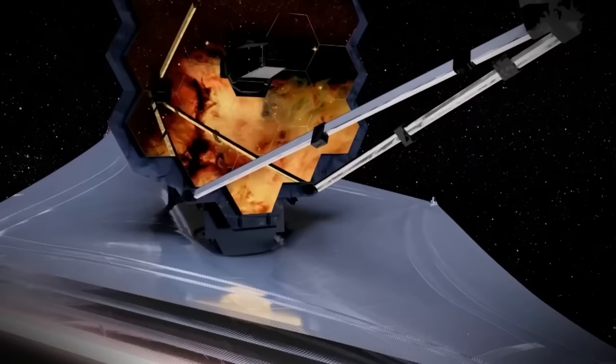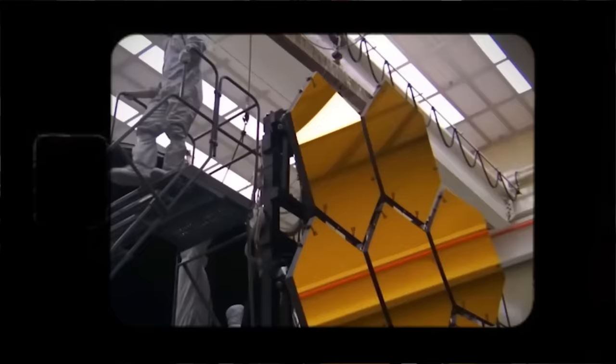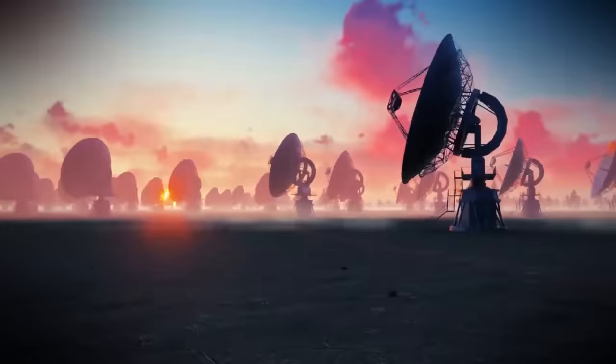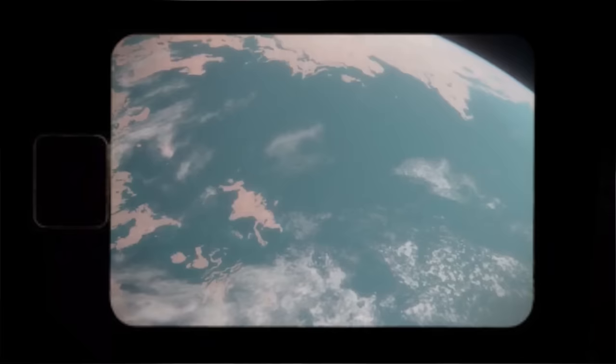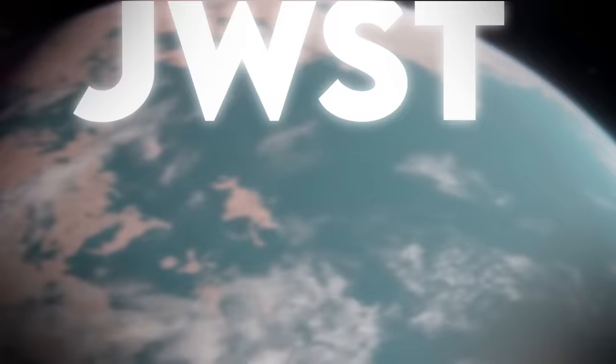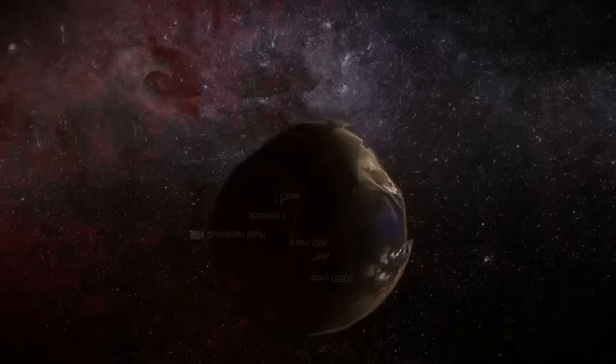The Webb's intricate instruments, including the near-infrared camera and the mid-infrared instrument, have captured an exquisite image that transcends the limitations of previous telescopic observations. The surface of Proxima b, once shrouded in celestial ambiguity, now stands vividly illuminated in the digital canvas provided by the JWST. Mountains rise majestically, valleys carve through the landscape, and intriguing features hint at the geological diversity that characterizes this distant world.